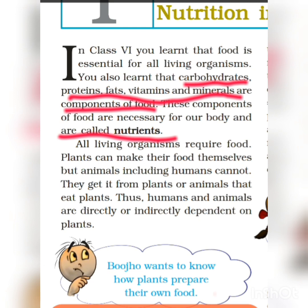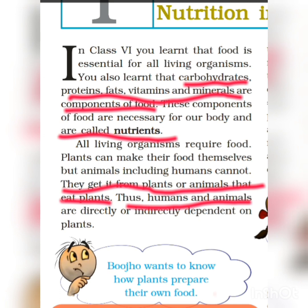All living organisms require food. Plants can make their own food themselves, but animals, including humans, cannot. They get it from plants or from animals that eat plants. Thus, humans and animals are directly or indirectly dependent on plants.